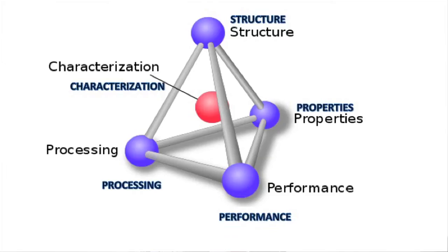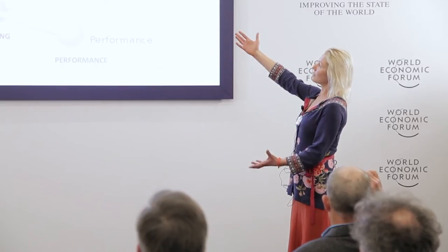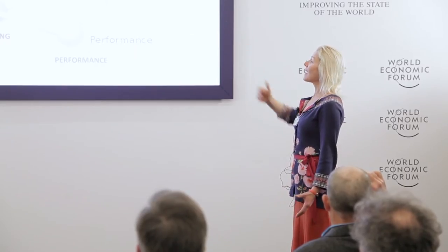I'd like to begin by showing you this tetrahedron — rather than a triangle — that we use in material science between processing, performance, properties, and structure. If you synthesize a material in a certain way and process it, it will inevitably have certain structure and certain properties, and that will drive performance. We are able to characterize this.